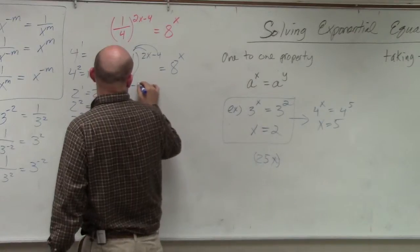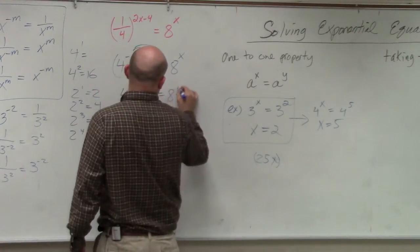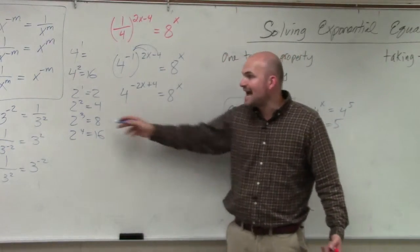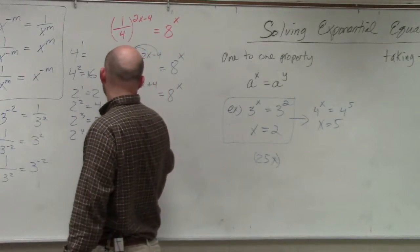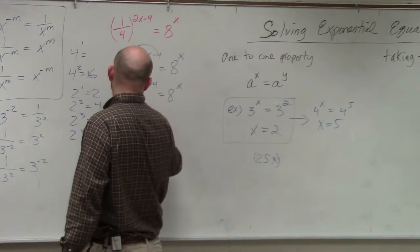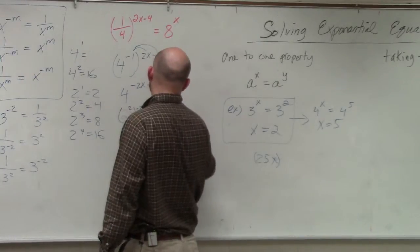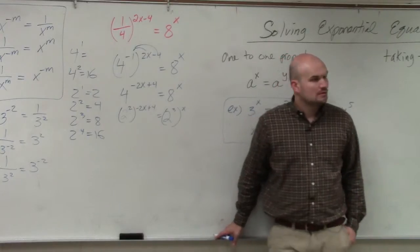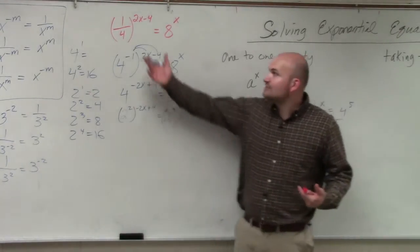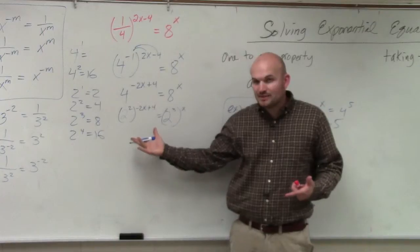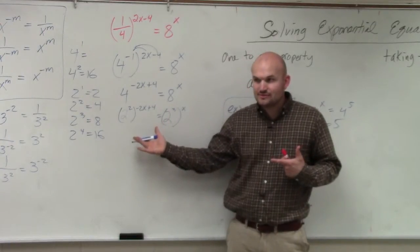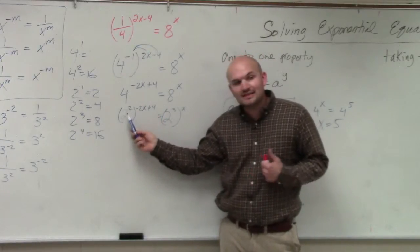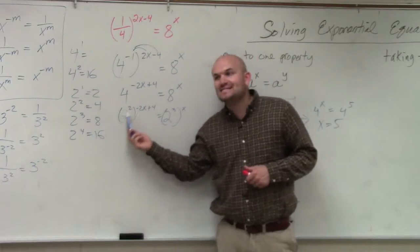So this is 4 to the negative 2x plus 4 equals 8 to the x. I distributed that. Then let's rewrite 4 and 8 as base 2s. So this is 2 squared to the power, equals 2 cubed. Now I have an equation with two exponents where the base is 2.